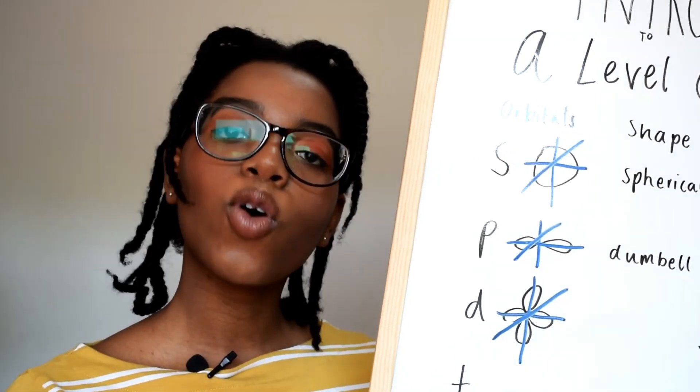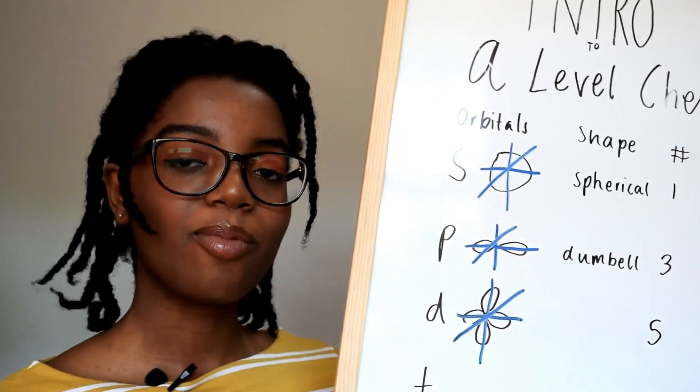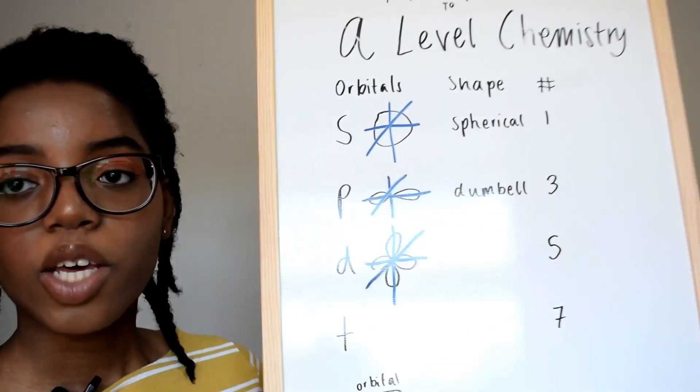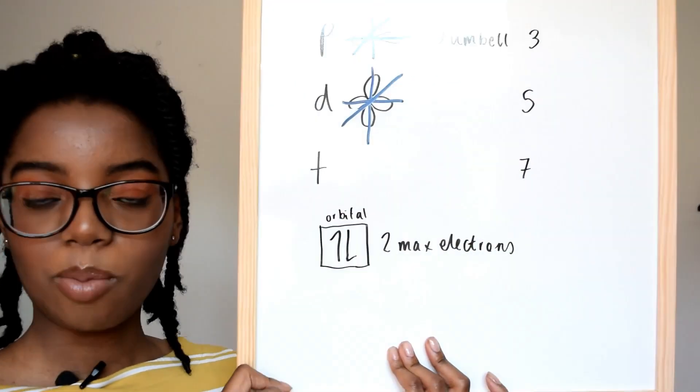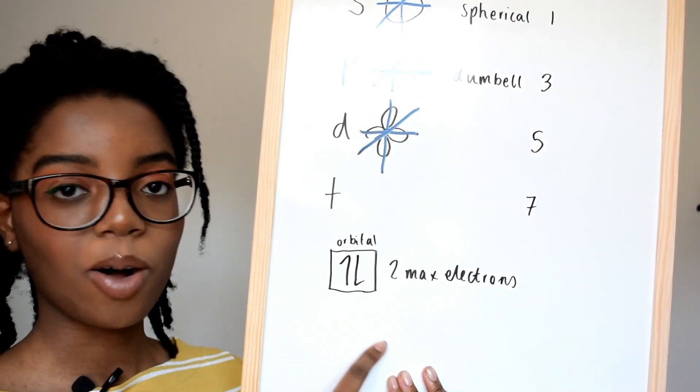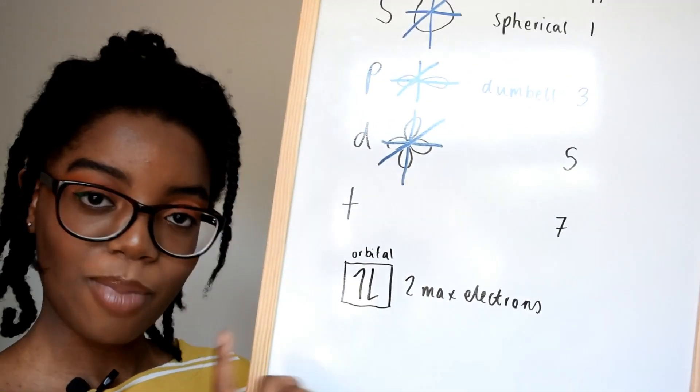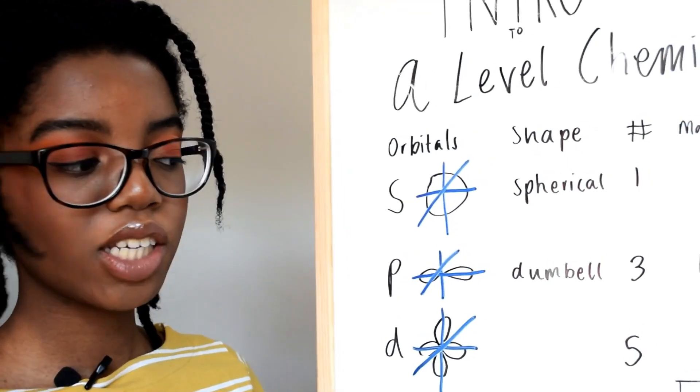Instead we have the subshells models where we can assume where it is within space. The electron shells are made up of atomic orbitals. Think of an orbital more like the region of space where the electron may be. There's four main types of orbitals: s is sharp, p is principal, d is diffuse, and f is fundamental. Each orbital is made up of two electrons spinning oppositely to each other.